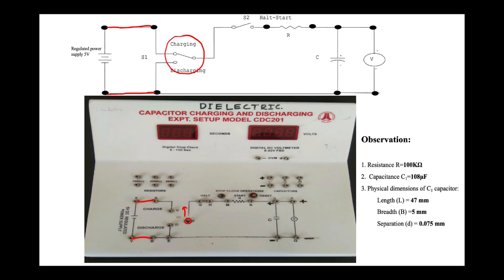This toggle button switch is internally connected. There is one button: if we shift it upward, the entire circuit will start charging the capacitor; if we shift it downward, the entire setup goes into discharging mode. M and N are the resistor connection points. We need to connect the 100 kilohm resistance chosen for this experiment.